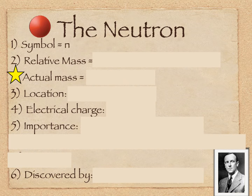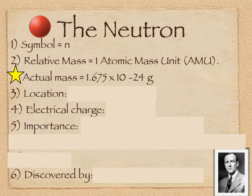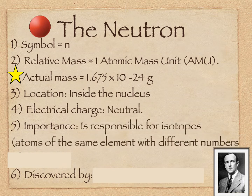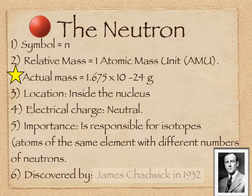The neutron is N or N0. Its atomic relative mass is the same as a proton, 1 AMU. Its actual mass is relatively close to the proton: 1.675 times 10 to the negative 24 grams. It's inside the nucleus with the proton. It's neutral and it is responsible for isotopes — atoms of the same element but with different neutrons. The number of neutrons changes, so the mass number of the element changes and you call them isotopes. That was discovered by Chadwick in 1932.